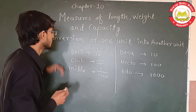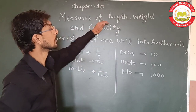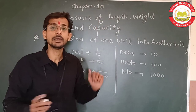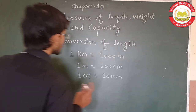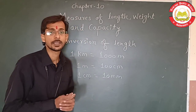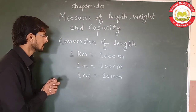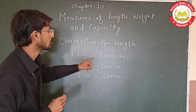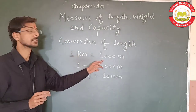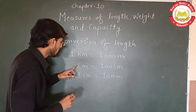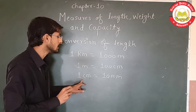Now let's start with conversion of length. The standard unit of length is meter. So 1 km is equal to 1000 meters — we know that 1 km is 1000 meters. 1 meter is equal to 100 cm, and 1 cm is equal to 10 mm.